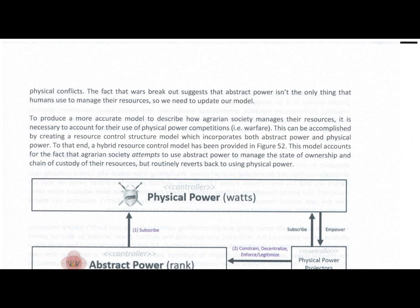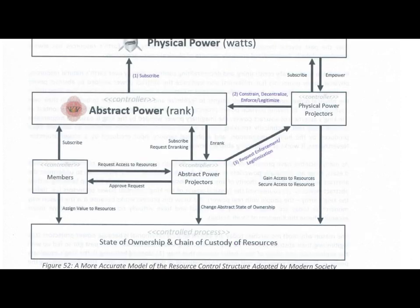The fact that wars break out suggests that abstract power isn't the only thing that humans use to manage their resources, so we need to update our model. To produce a more accurate model describing how agrarian society manages their resources, it is necessary to account for their use of physical power competitions — i.e., warfare. This can be accomplished by creating a resource control structure model which incorporates both abstract power and physical power. To that end, a hybrid resource control model has been provided in Figure 52.